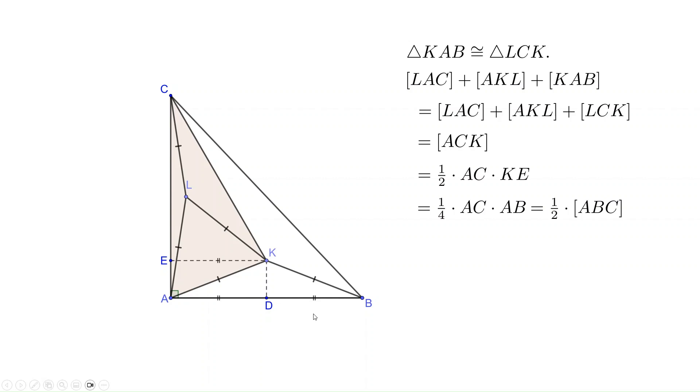And we end up with one half of the area of triangle ABC. In other words, the sum of these three triangles is just one half of the triangle ABC. Then the quadrilateral must be the other half of the triangle ABC.